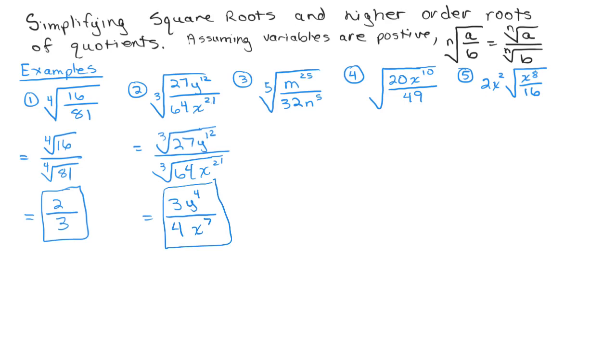Alright, going on to the third problem here. We have a fifth root. Same thing, we're going to do the fifth root of the numerator, so the fifth root of m to the 25th over the fifth root of 32n to the 5th. Alright, so the fifth root of m to the 25th, since 5 goes into 25 evenly, we just divide to get our new exponent, m to the 5th. And the fifth root of 32, well, that is 2. It's a whole number. And the fifth root of n to the 5th is simply n. So here's our third problem.